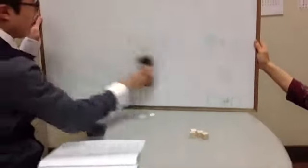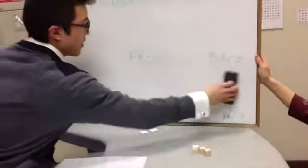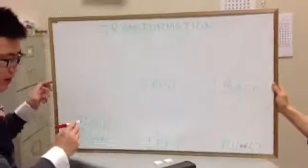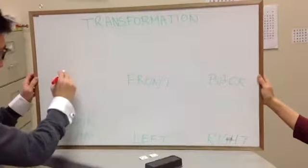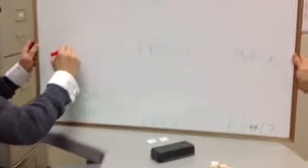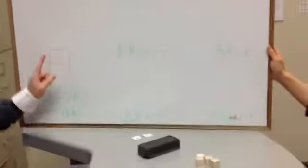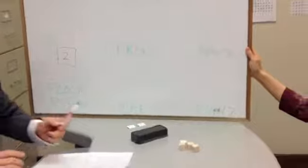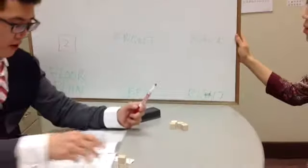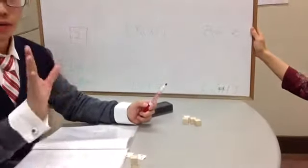So now let's make it a little bit harder. We're going to add a block on top of this block. So now instead of the single block, on our floor plan it's going to look something like this — a two, meaning that there's two blocks on one spot. The floor plan is always drawn from the top.